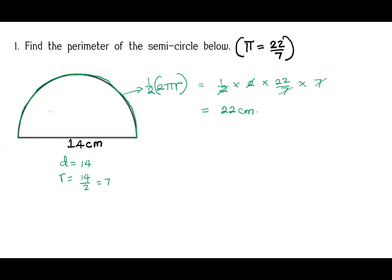So 22 centimeters is the length of this arc, the curved part. Now we can find the perimeter. The perimeter will be the length of this arc (22 centimeters) plus this straight length (14). So 22 + 14 = 36 centimeters. The distance around this semicircle is 36 centimeters.